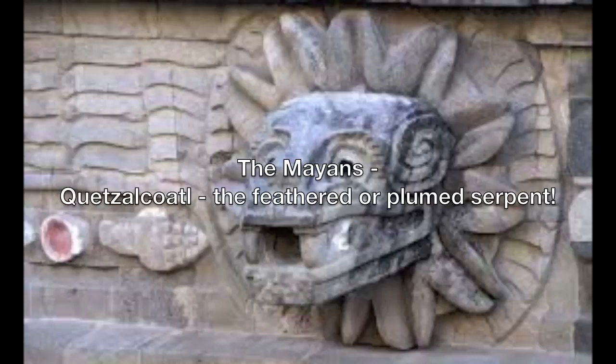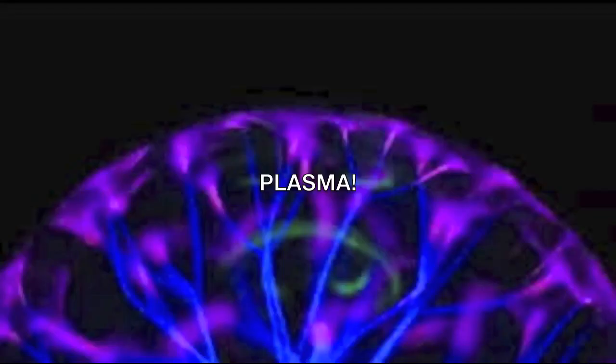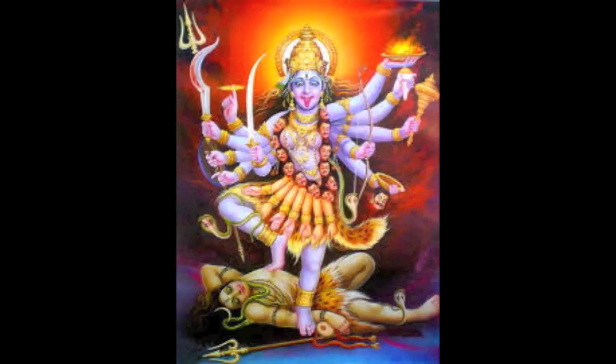The Mayans depicted Quetzalcoatl — the feathered or plumed serpent — as plasma. The Hindus depicted Kali as plasma as well.